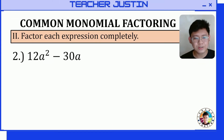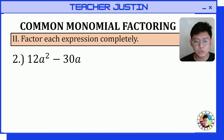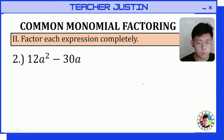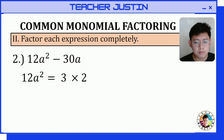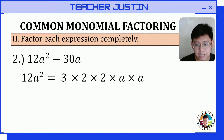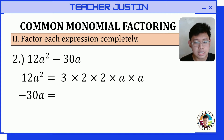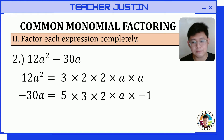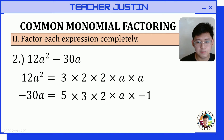Let's have the second item: factor 12a squared minus 30a. First, let's get the prime factors of each term. For 12a squared, the prime factors are 3 times 2 times 2 times a times a. For negative 30a, the prime factors are 5 times 3 times 2 times a times negative 1. Note that the negative sign is included in the factors.